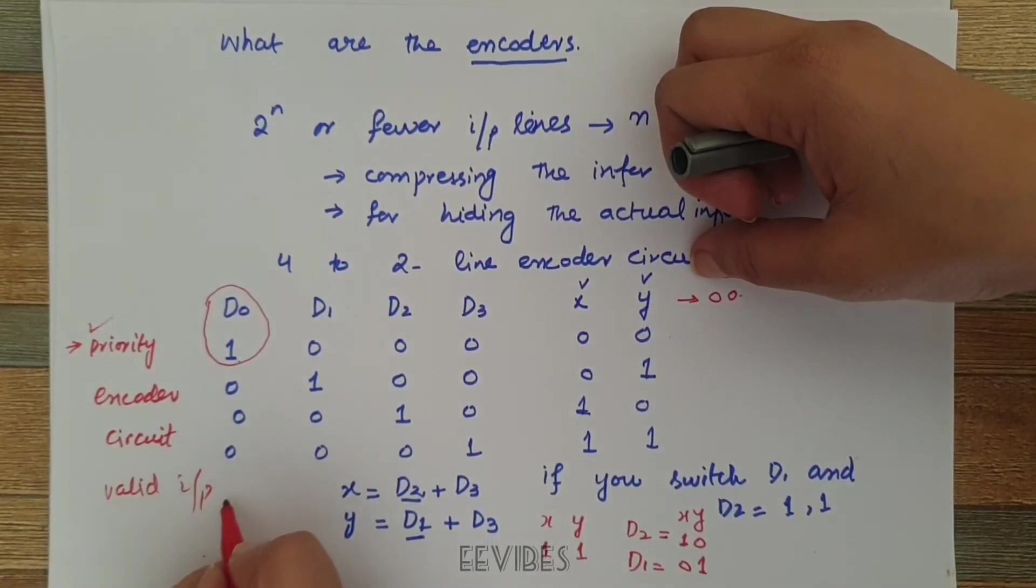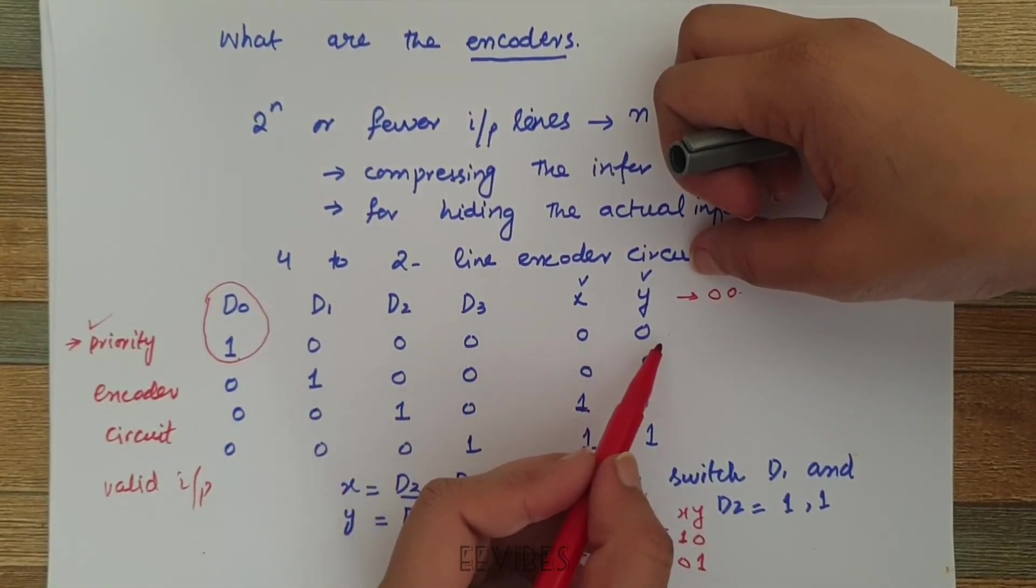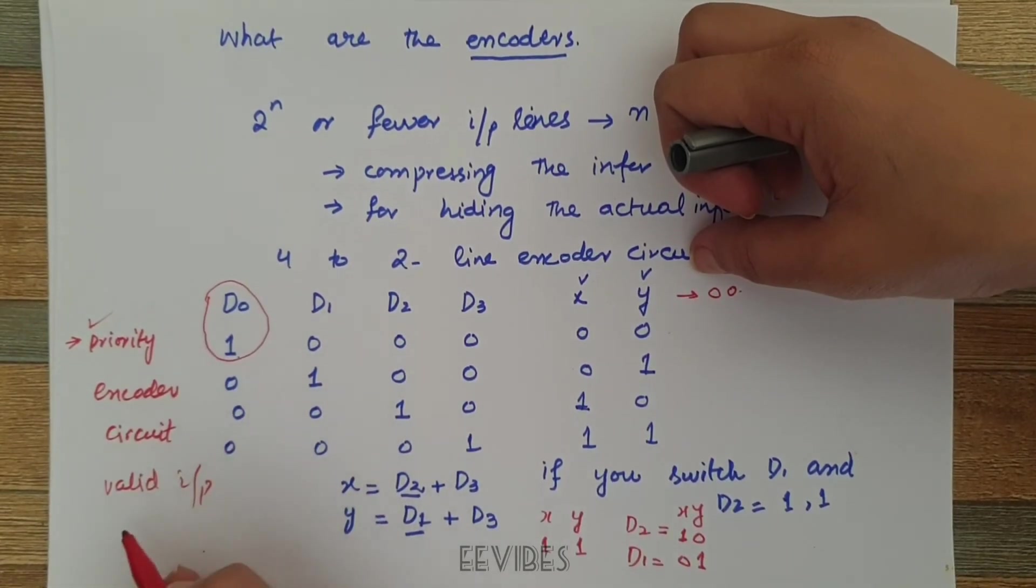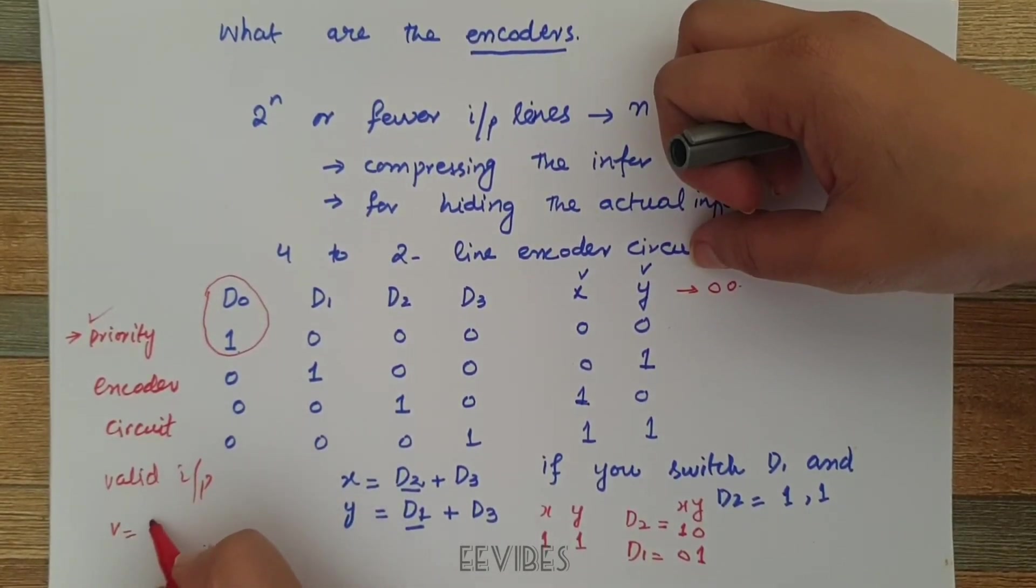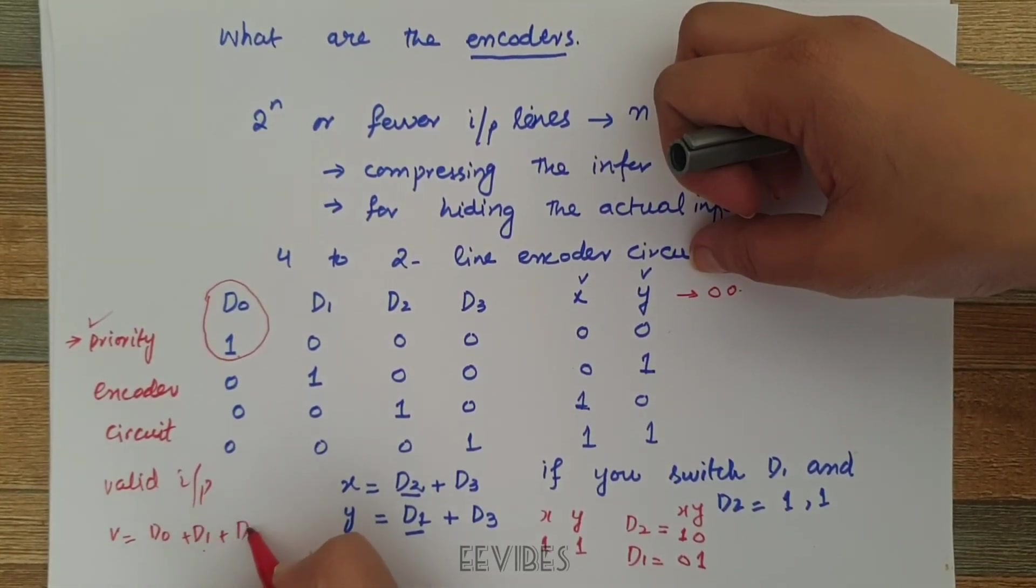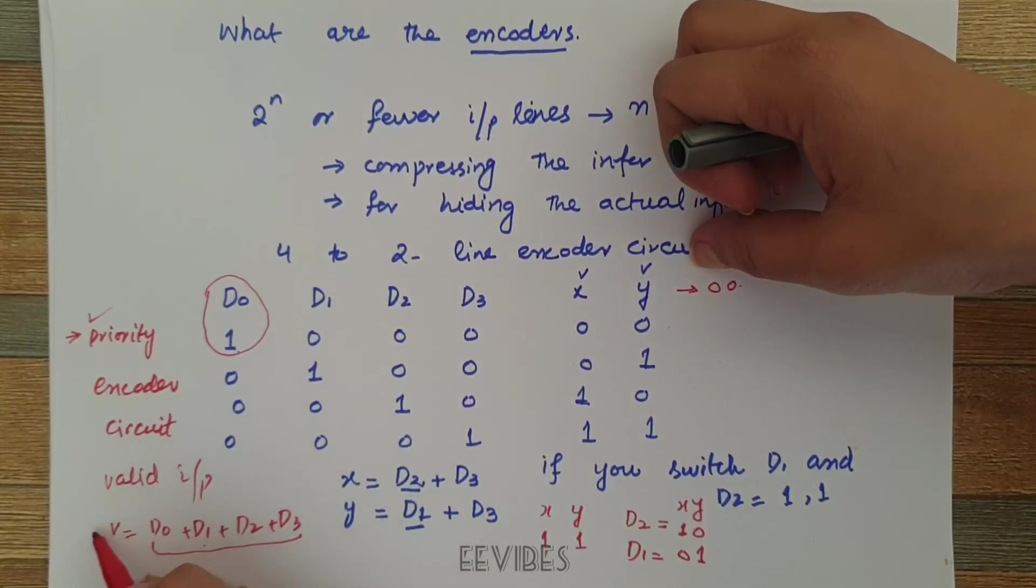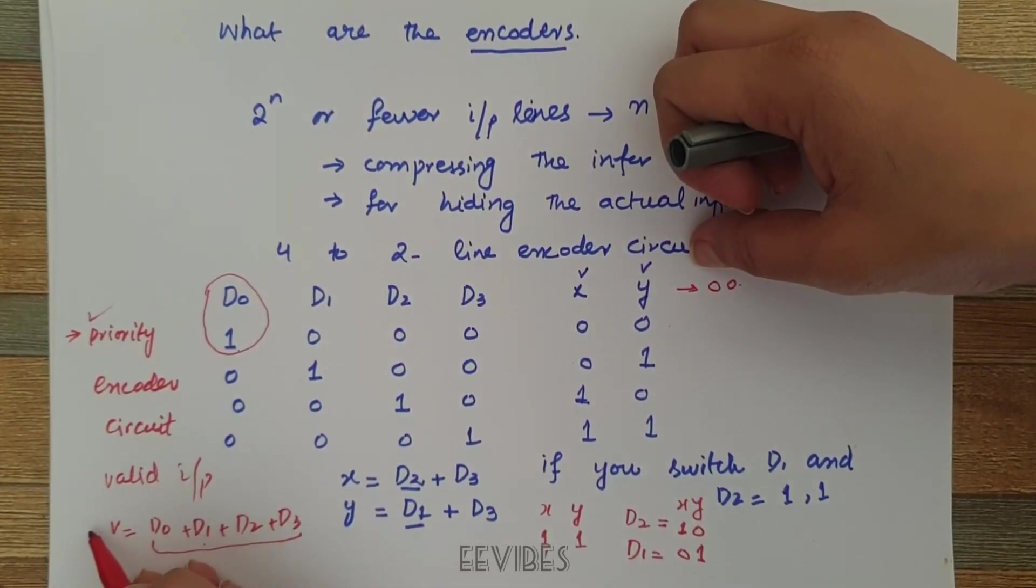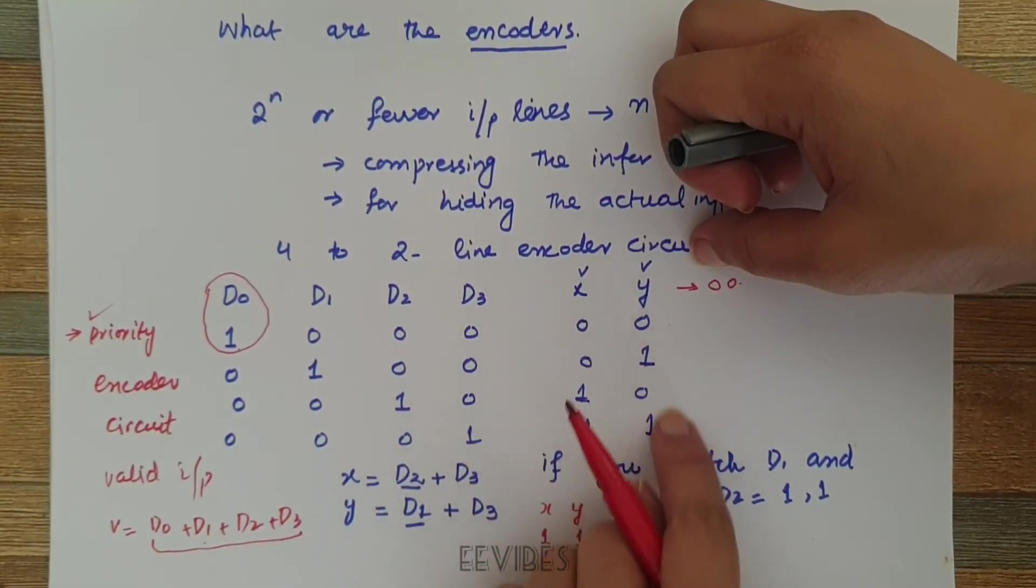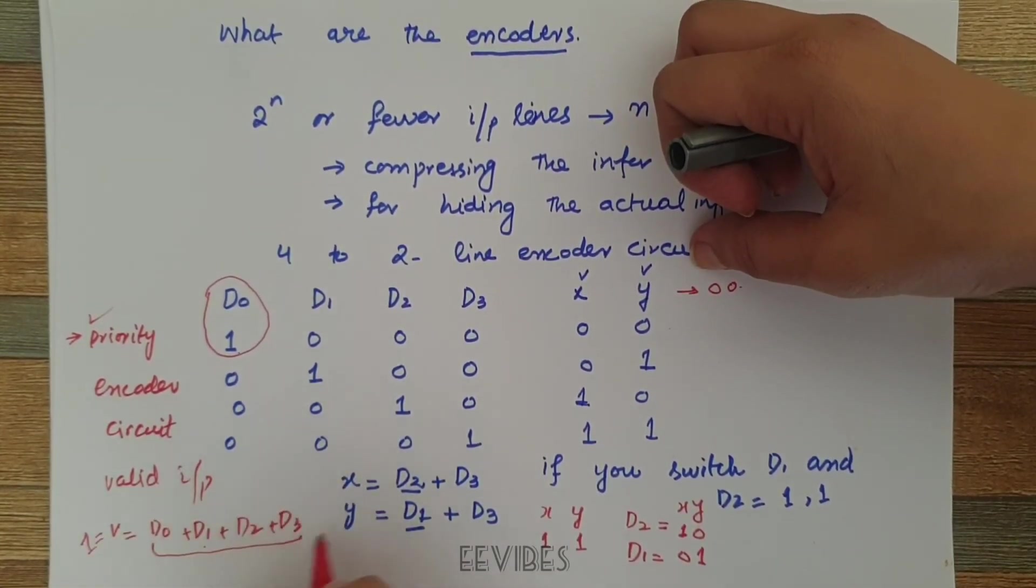So the valid input will actually validate what should be the output value when there is some valid input present. So v would be equal to the OR of D0, D1, D2, and D3. When there is some valid input present then you will get the corresponding output code. So v should be equal to 1 for generating the output.